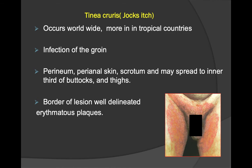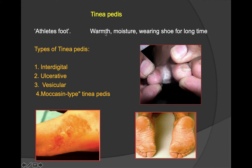Tinea pedis, also called athlete's foot, occurs in areas of the foot that are warm and moist; wearing shoes for a long time is a predisposing factor. Types of tinea pedis include interdigital, ulcerative, vesicular, and moccasin type. White colored lesions are seen between the digits.